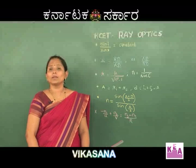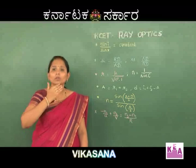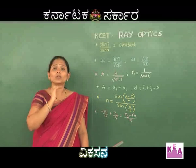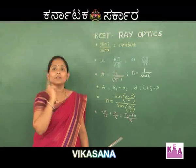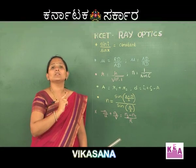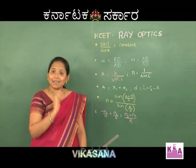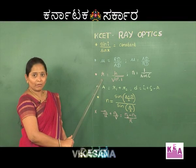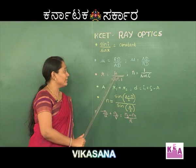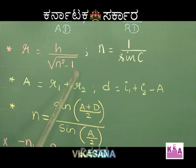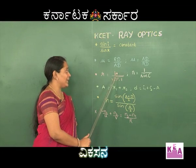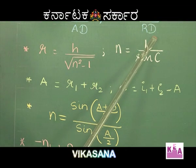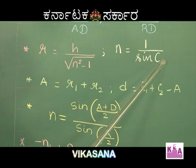Imagine a fish placed at the bottom of a water surface at a depth h. The fish looks into the outer world in the form of a circular frame due to total internal reflection. The radius of the circular frame is given by r = h / √(n² − 1), where h is the depth and n is the refractive index, calculated using n = 1 / sin c, where c is the critical angle.